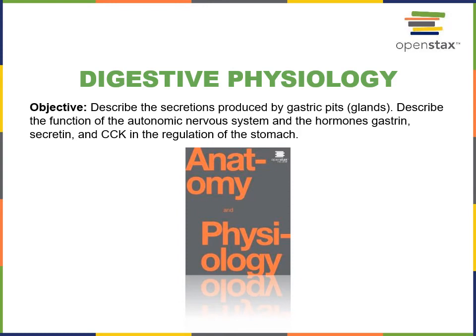This video will cover the following objectives from digestive physiology: describe the secretions produced by gastric pits, and describe the functions of the autonomic nervous system and the hormones gastrin, secretin, and CCK in the regulation of the stomach.